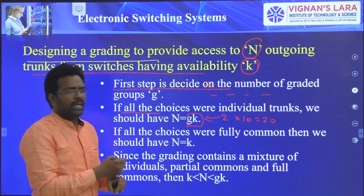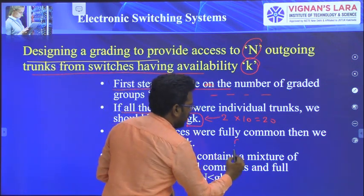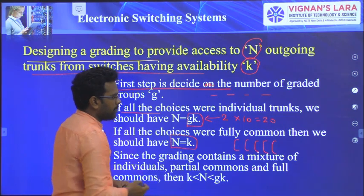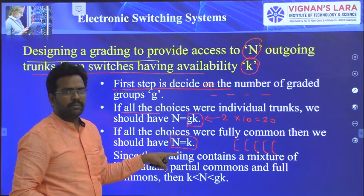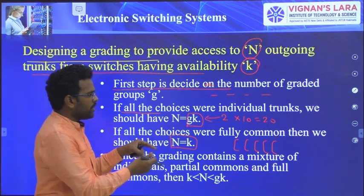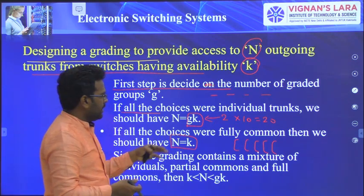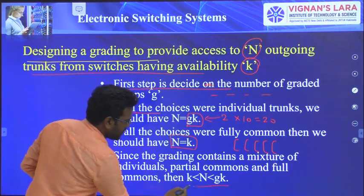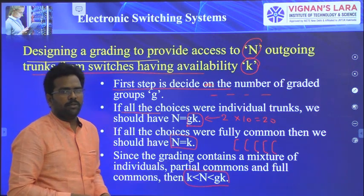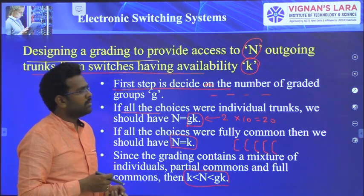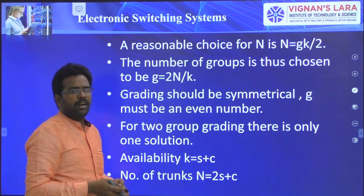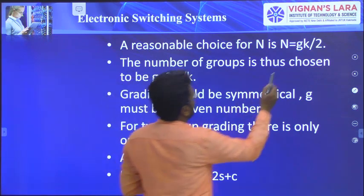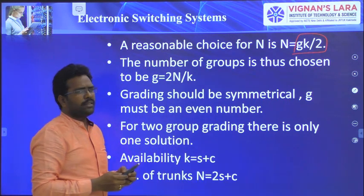To get the optimum value of trunks, because if the number of trunks is too small it cannot handle traffic properly, you have to choose the optimum value of number of trunks. The reasonable choice for N is G×K/2. From this, you can find the value of G as G = 2N/K. Always G should be even because there is a symmetrical connection in grading.